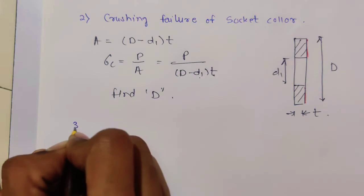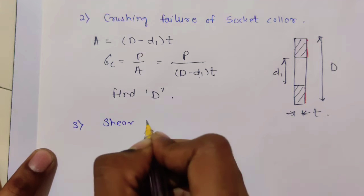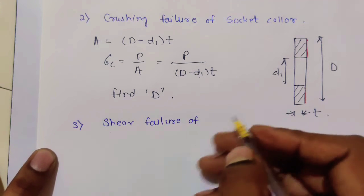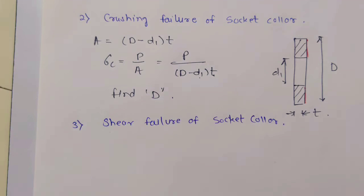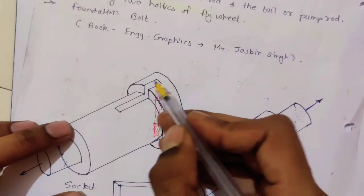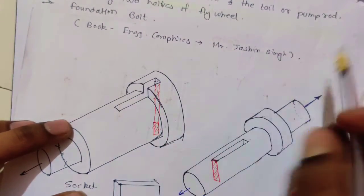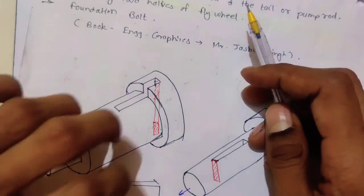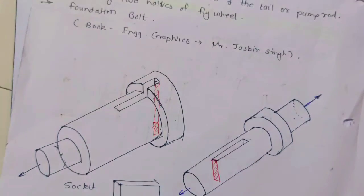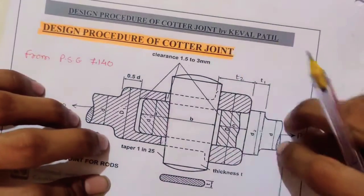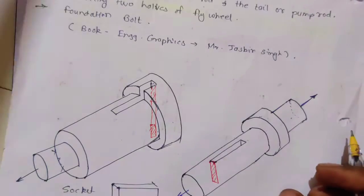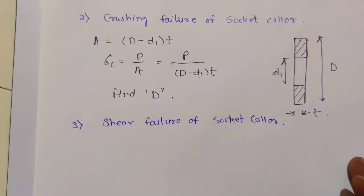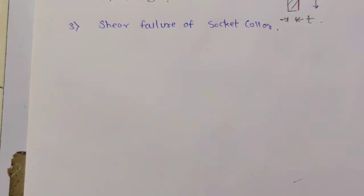Now the third step is shear failure of socket collar. The cotter is at this point — you are pulling the cotter using the spigot from one side and the socket is touching at this point from the other side. Let's see the animation to understand what will happen.